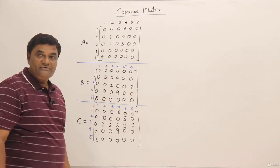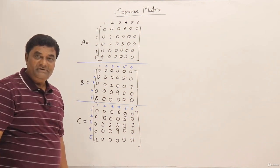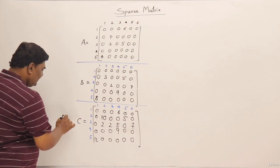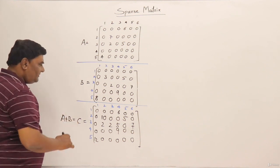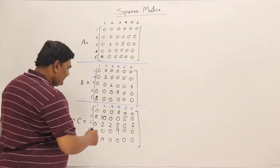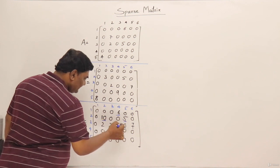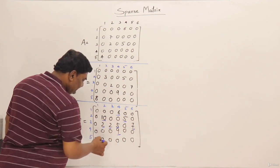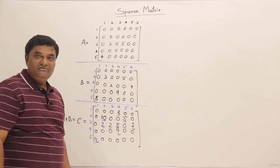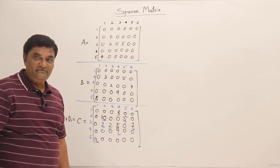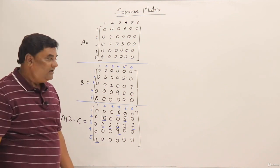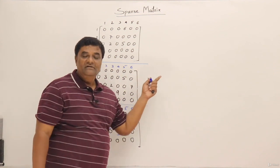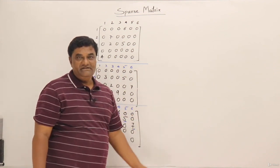So this is the addition of two sparse matrices A and B, and I got the result C. C is obtained by adding A plus B. Counting the nonzero elements in C: 1, 2, 3, 4, 5, 6, 7, 8, 9 — so 9 nonzero elements. Now let us do the same thing using coordinate list representation.